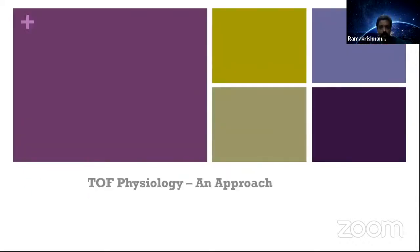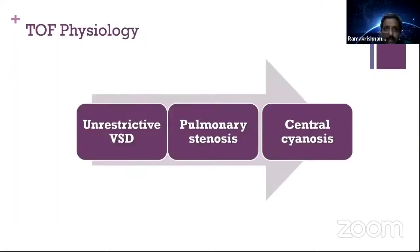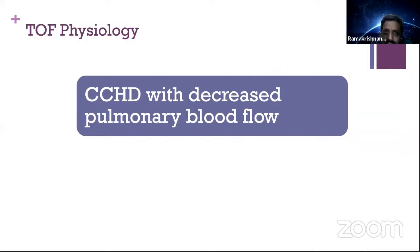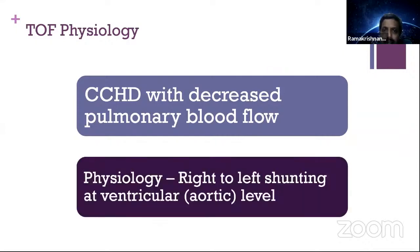Coming specifically to TOF physiology: the characteristic features are any form of unrestricted VSD with pulmonary stenosis leading to central cyanosis — CCHD with decreased pulmonary blood flow, with right-to-left shunting at the ventricular or aortic level.